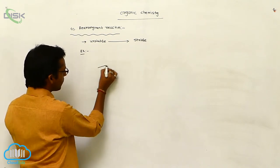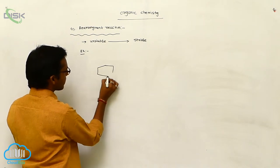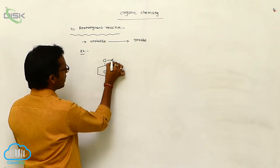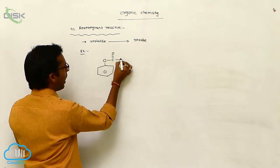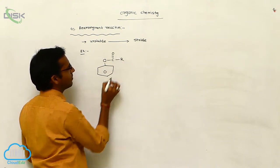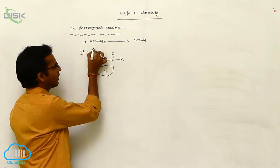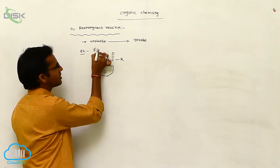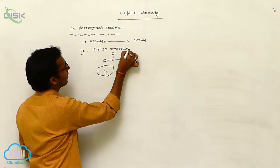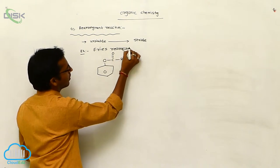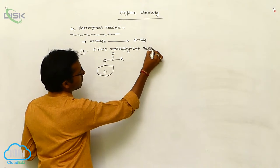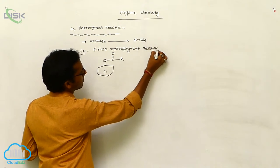As an example, consider an acyl group — C double bond O — attached to an alkyl group on orthoacylbenzene. This is your Fries Rearrangement Reaction.